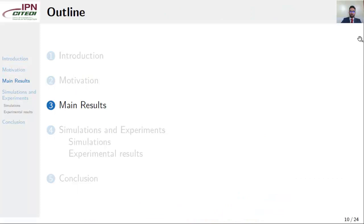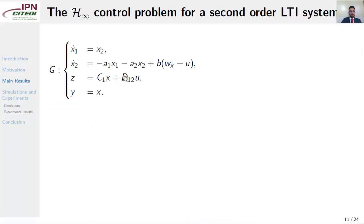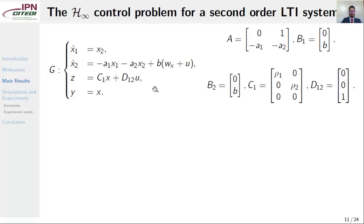Our main results are shown next. Consider a second order linear time invariant system represented by these equations. Notice that we are measuring the output state. And this system G can be expressed in matrix form by these matrices.